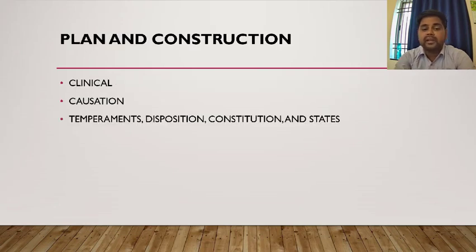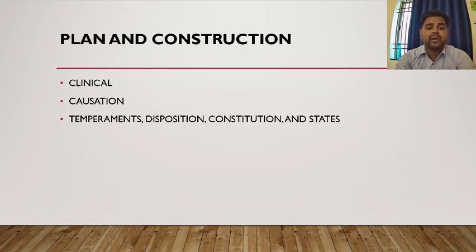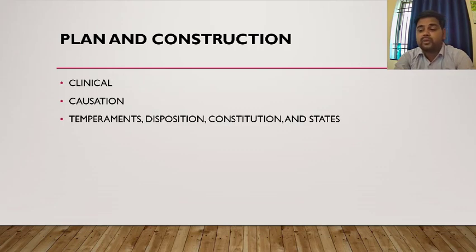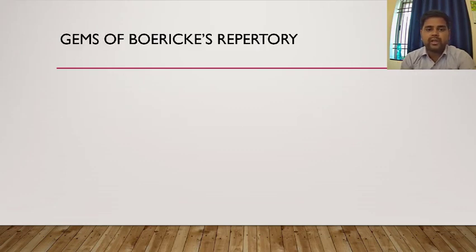You can see there are majorly three chapters. The plan of construction remains the same. The three basic chapters are: first, Clinical; second, Causation; and third, Temperament and Disposition. Especially the clinical and causation chapters of this repertory are very useful — I have found some beautiful cases being cured from these two chapters. Temperaments can also be used sometimes, but in the clinical and causation chapters, if you find some beautiful causation from the Clarke repertory — even a single medicine rubric — the result may get enhanced drastically. These are the gems of this repertory.